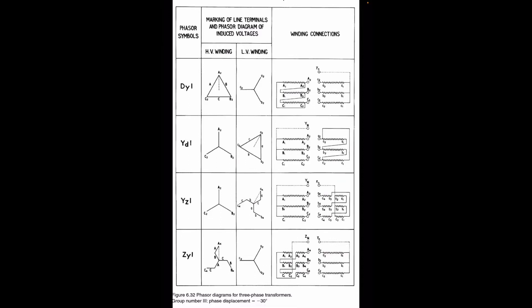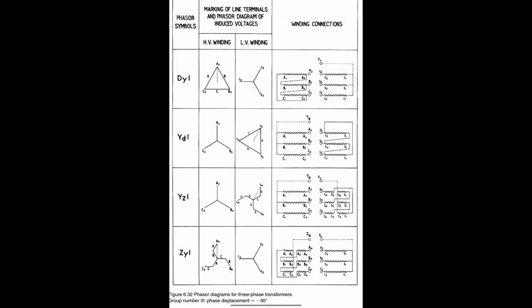Hello friends, welcome to Electrical Techie. Today we will learn how to draw the vector diagram from the winding connections of a three-phase transformer. Three-phase transformers have various configurations. The configuration we will discuss today is Dy1, and you can see the winding connections in the first row.